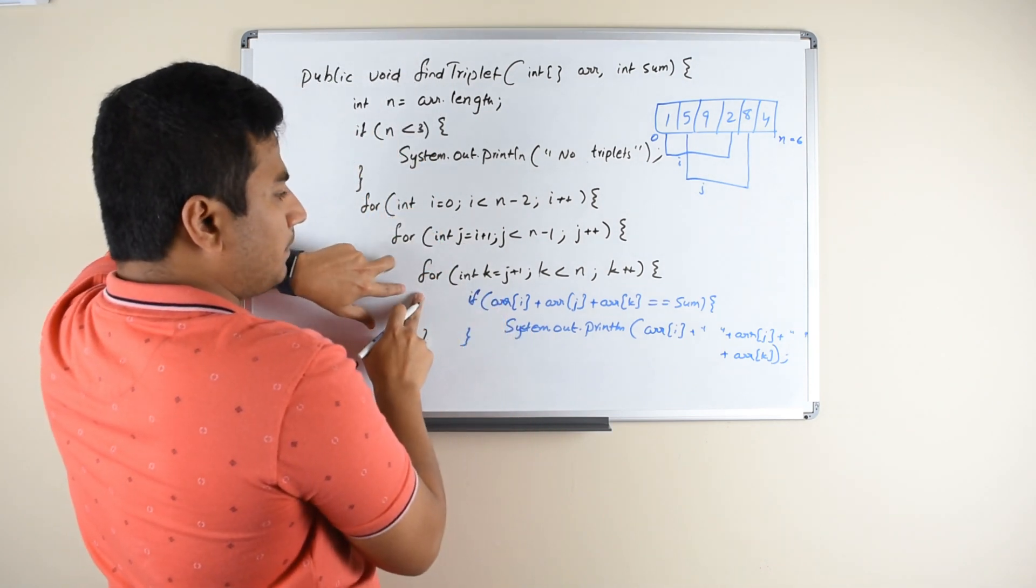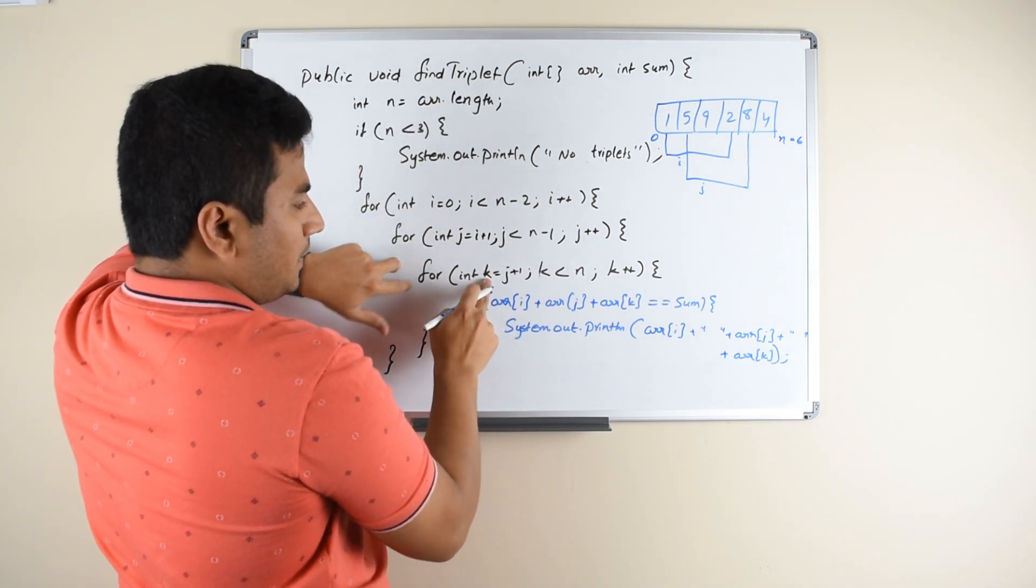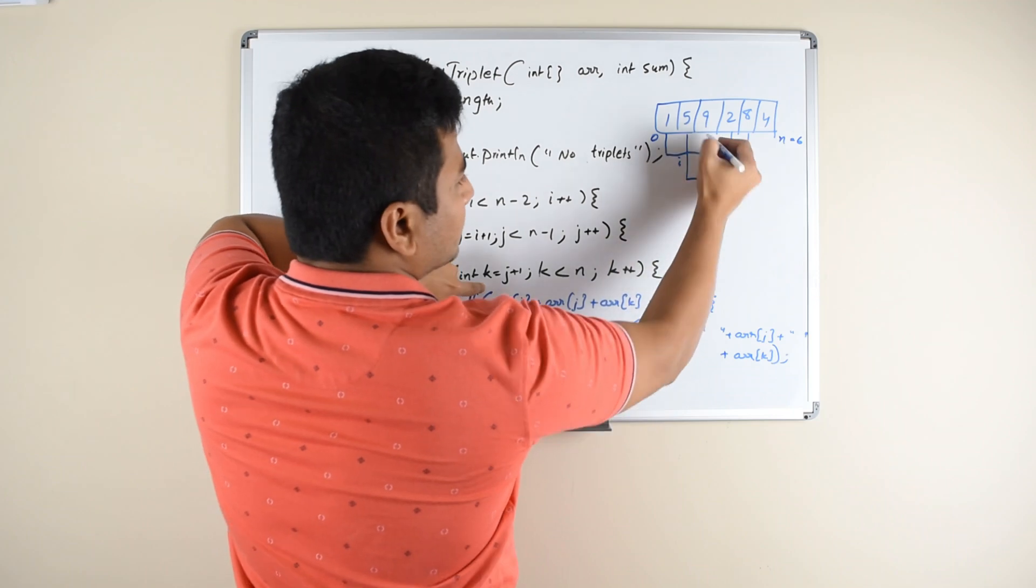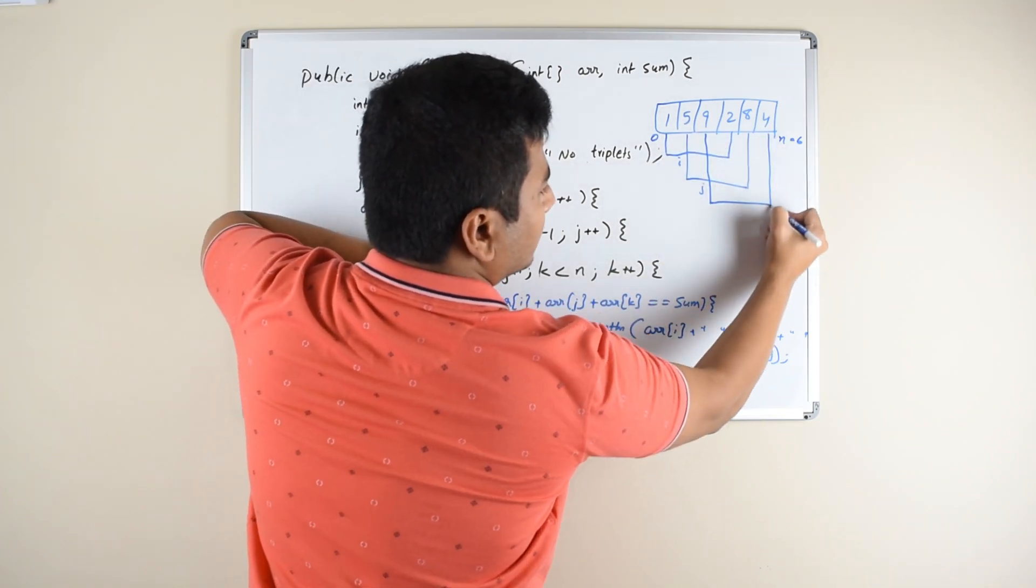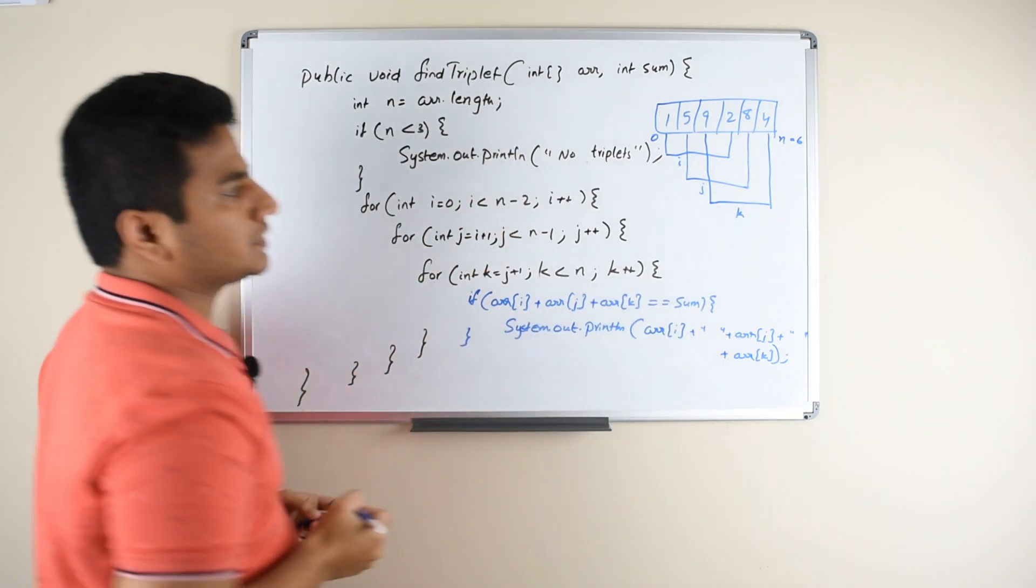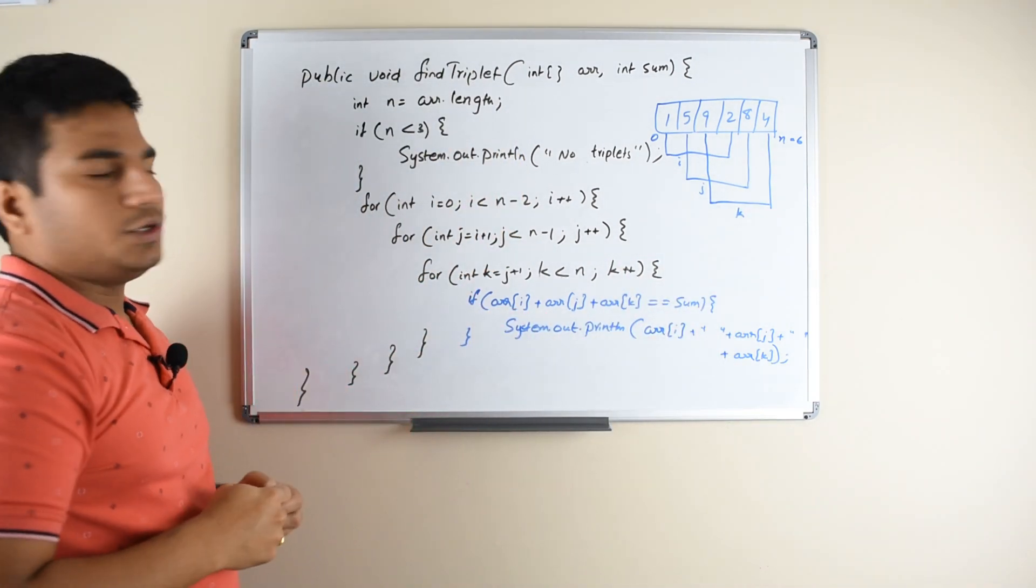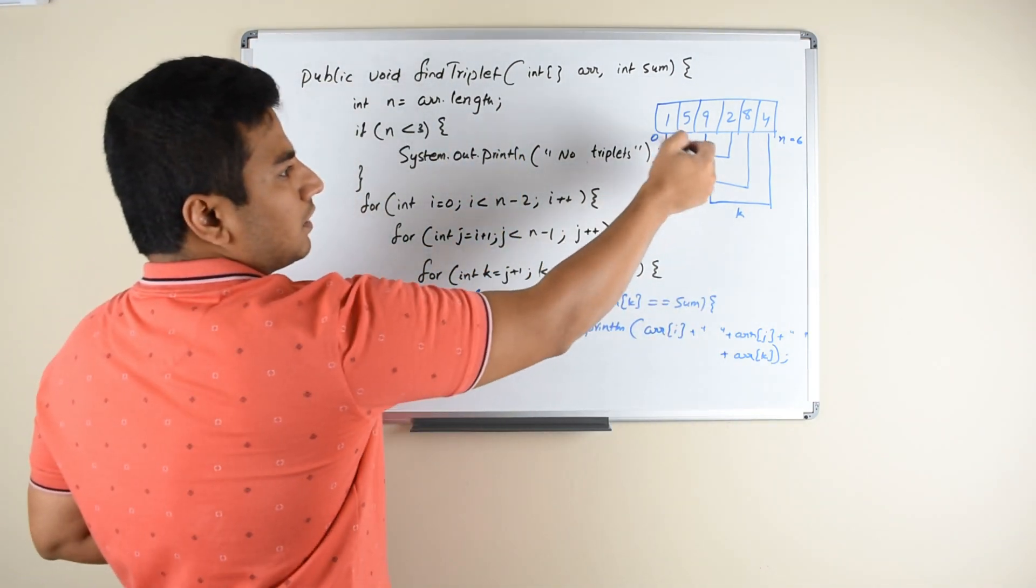And the third element of your triplet will be k, which starts with j plus 1. So your k starts from here and goes until this element. So this is k. You find a triplet in this array with these loops.